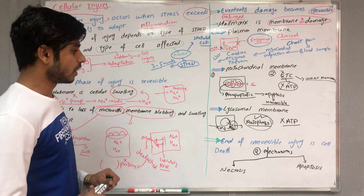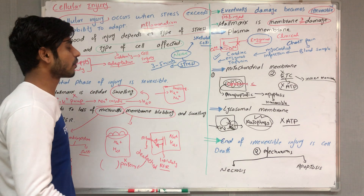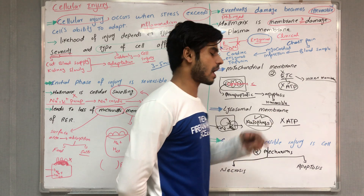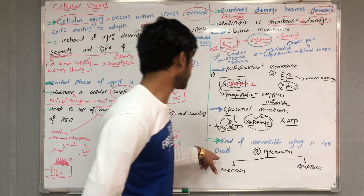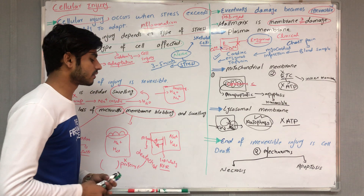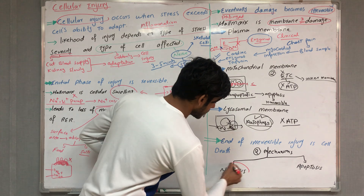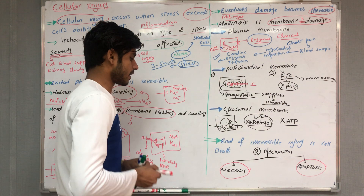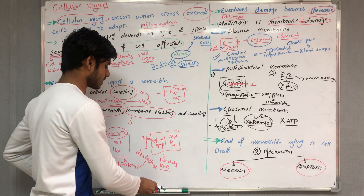At the end of irreversible injury, the cell dies. There are two mechanisms of cell death: necrosis and apoptosis. These are separate large topics that will be discussed in the next lecture.